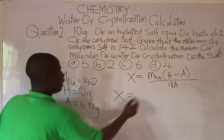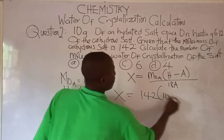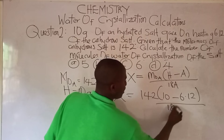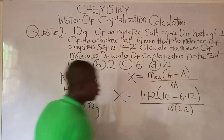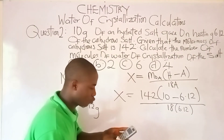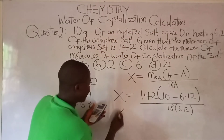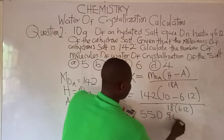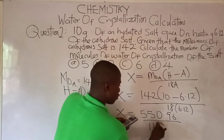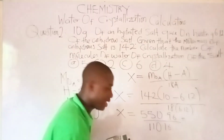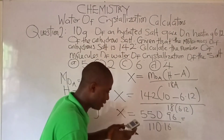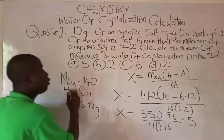Inputting the parameters: X = 142 × (10 − 6.12) / (18 × 6.12). So X = 142 × 3.88 / (18 × 6.12). That gives 550.96 / 110.16. The value of X becomes 5. So the answer is Option A. You can see how problems on this aspect are tackled.